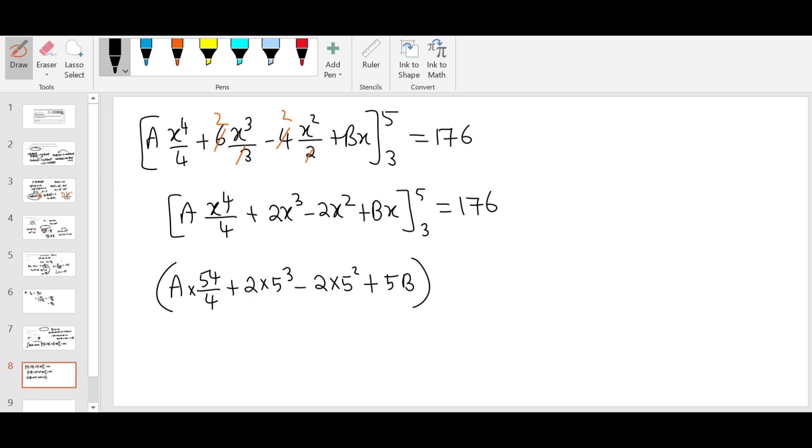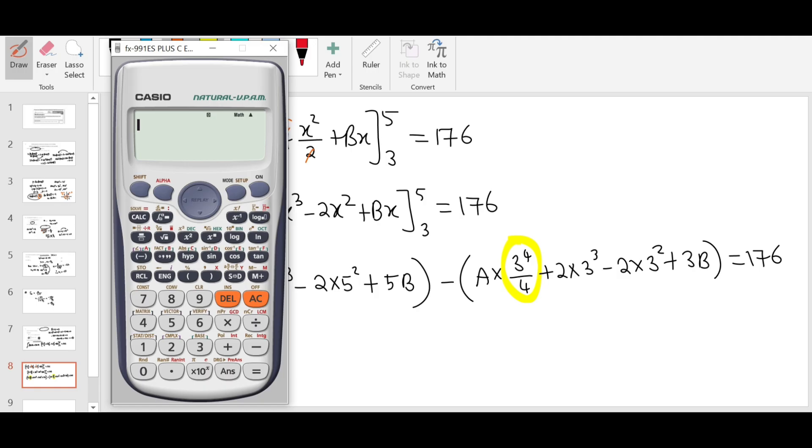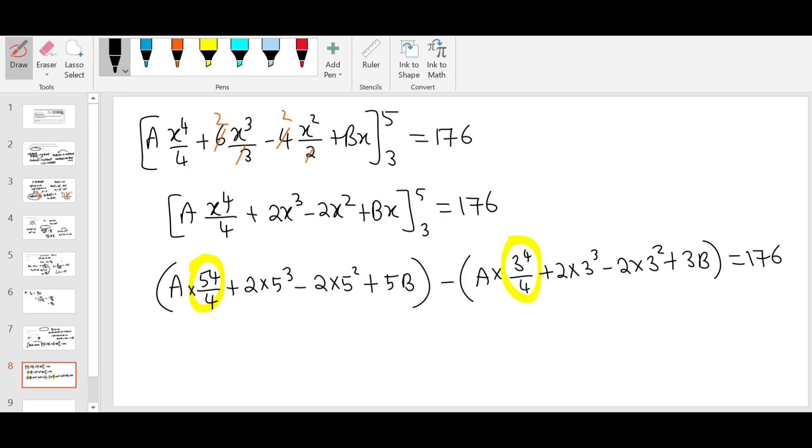I'm going to sub in the upper limit now, 5 in place of x. So A times 5 power 4 by 4 plus 2 times 5 cubed minus 2 times 5 squared plus 5B. That's upper limit. Minus, sub in 3: 3 power 4 by 4 plus 2 times 3 cubed minus 2 times 3 squared plus 3B equals 176. You see how I'm going to simplify the like terms. I'm going to take this minus this, that would be the coefficient of A. So I'm going to put 5 power 4 divided by 4 minus 3 power 4 divided by 4, which gives 136A. Let's simplify the numbers later.